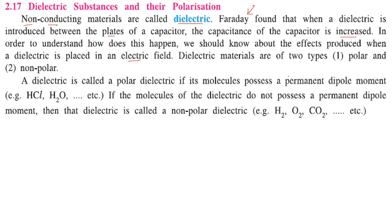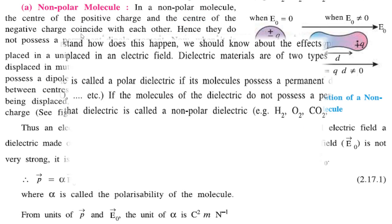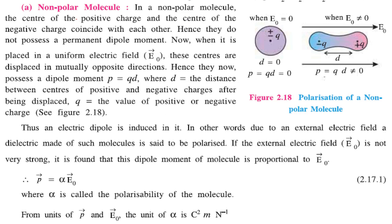Dielectric materials are of two types: polar and non-polar. A dielectric is called a polar dielectric if its molecules possess a permanent dipole moment — for example, HCl (H⁺Cl⁻) and H₂O. If the molecules of the dielectric do not possess a permanent dipole moment, then the dielectric is called a non-polar dielectric, for example H₂O₂ and CO₂.